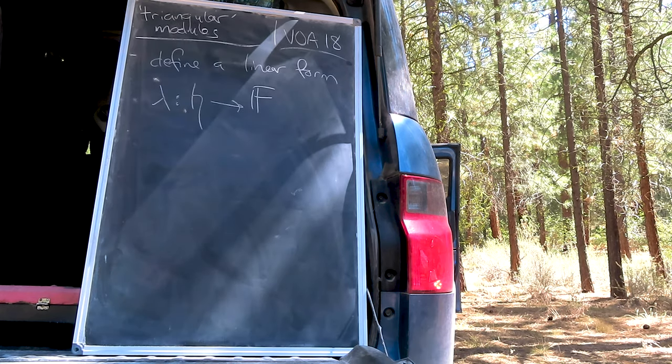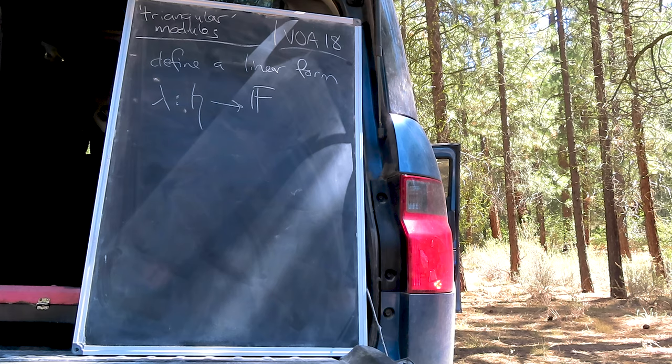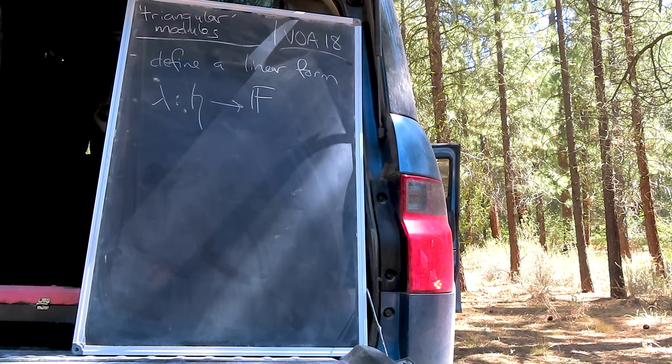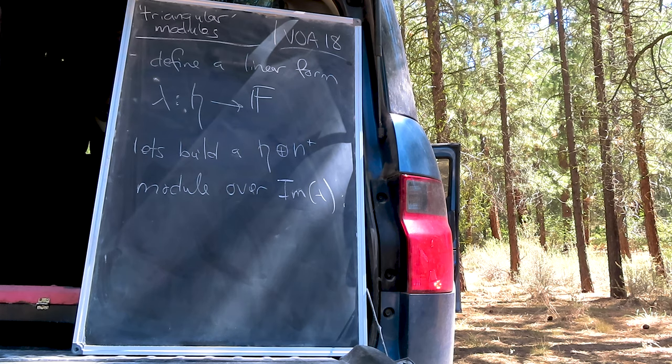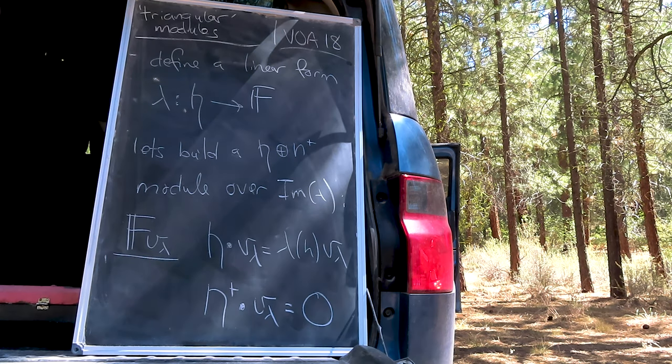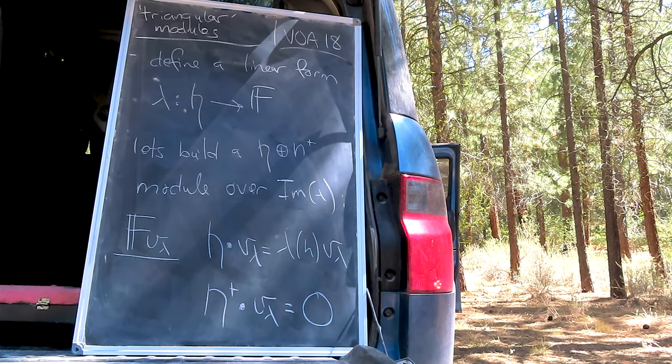To that end, we'll define a linear form lambda, which maps from the abelian sub-algebra H to the field F. The vacuum for our module is basically the codomain of lambda. Let's fix V sub-lambda as the basis vector for the vacuum.